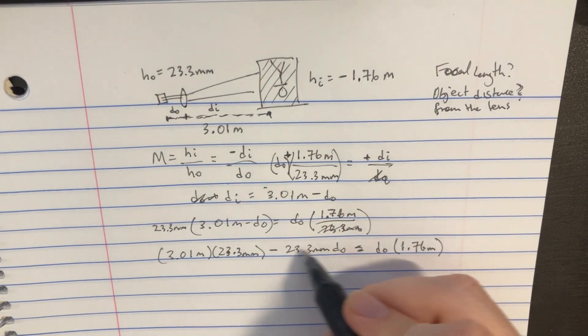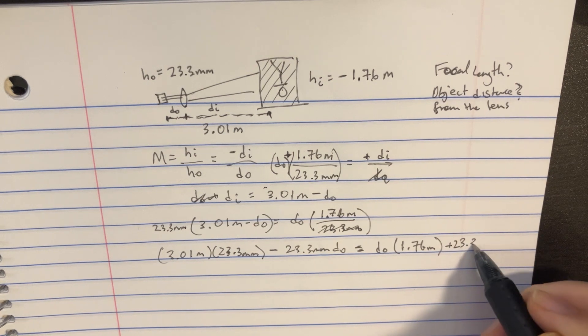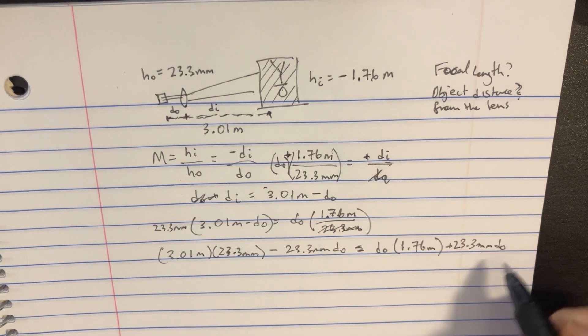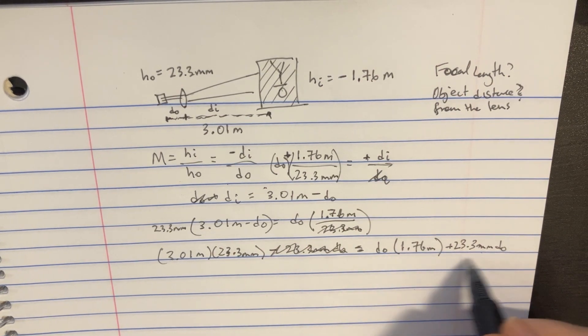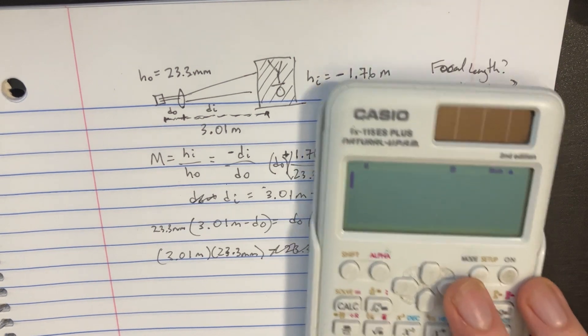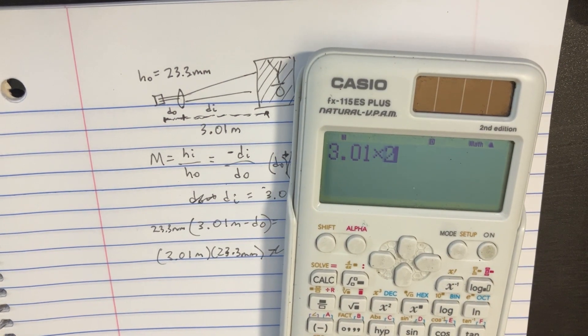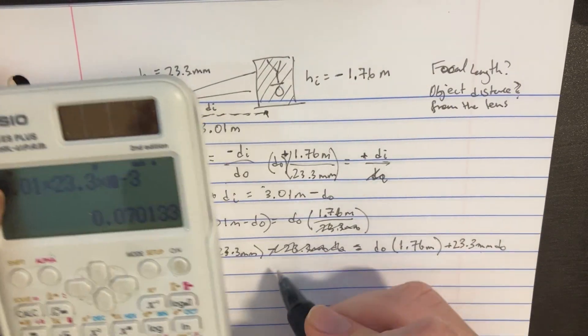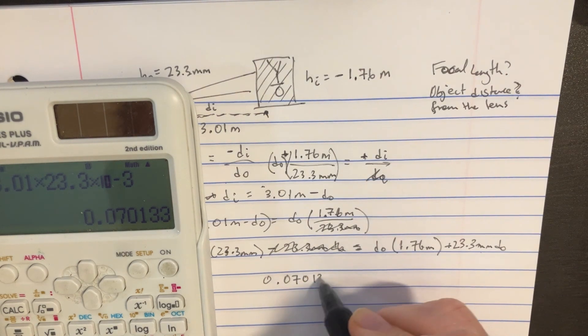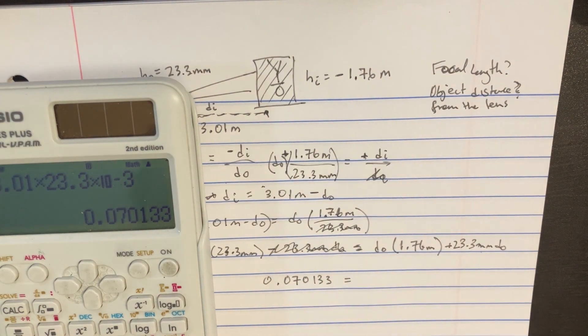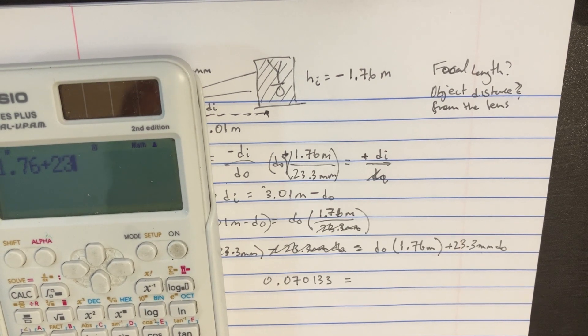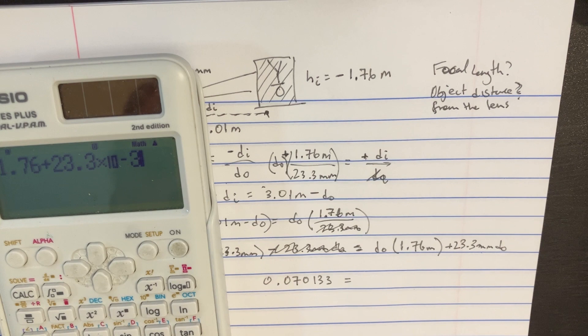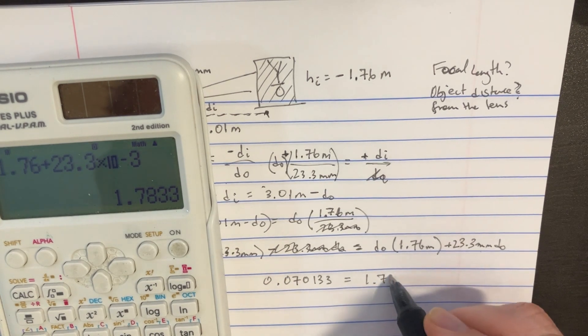So let's go ahead and just add this to the other side, plus 23.3 millimeters, getting rid of it on this side. And we're going to have to calculate this out here. On the left side, we have 3.01 meters times 23.3 millimeters, which gives us 70133. It's supposed to equal 1.76 plus 23.3 millimeters, which is 1.7833.